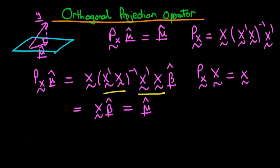Then we wanted to show that if we take the projection operator and operate it on some vector W which is actually orthogonal to the column space of X, then we should get zero out. Which vectors are orthogonal to the column space of X? One such vector is shown here in the diagram — it's Y minus μ̂. So if we operate P(X) on Y minus μ̂, we expect to get zero out.